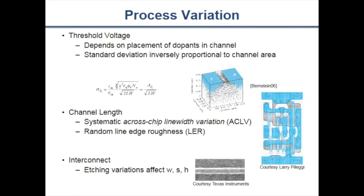We also get variation in channel length. When we lay out circuits in Cadence we draw rectangular polygons, but when we actually manufacture these devices they don't come out so perfectly. The same story happens on interconnect — depending on how it's fabricated, we can get variation in the width, height, and length of interconnects. This is the basis for process variation, and it's important for digital designers to be aware of it.